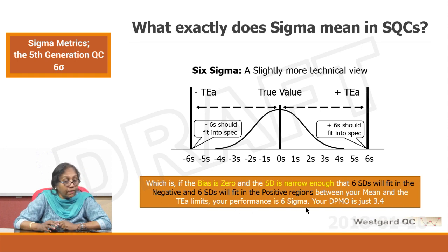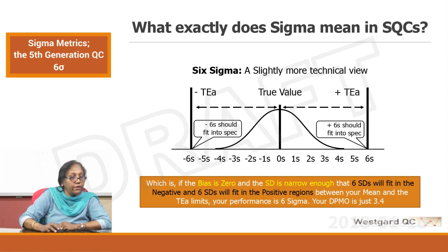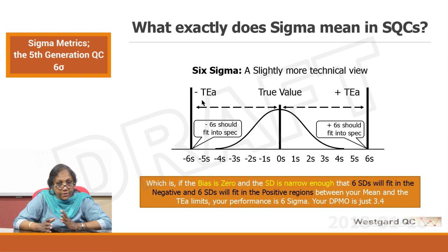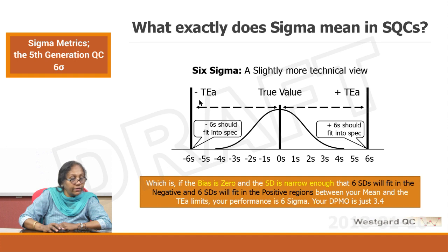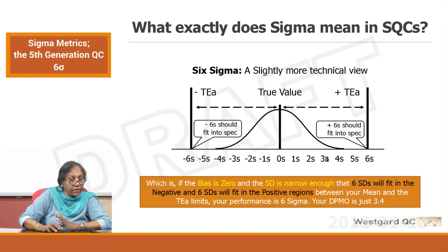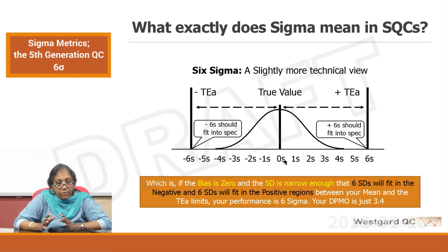When the bias is 0 and the SD is narrow enough that 6 standard deviations fit in the negative and 6 standard deviations fit in the positive regions between your mean and the total allowable error limits, your performance is 6 sigma and your DPMO is just 3.4. Total allowable error has lower and higher limits. Your Gaussian is standing right in the middle, your mean is the true value — there is no bias, your imprecision is very little — and you can accommodate 6 standard deviations on either side. This is your 6 sigma performance.